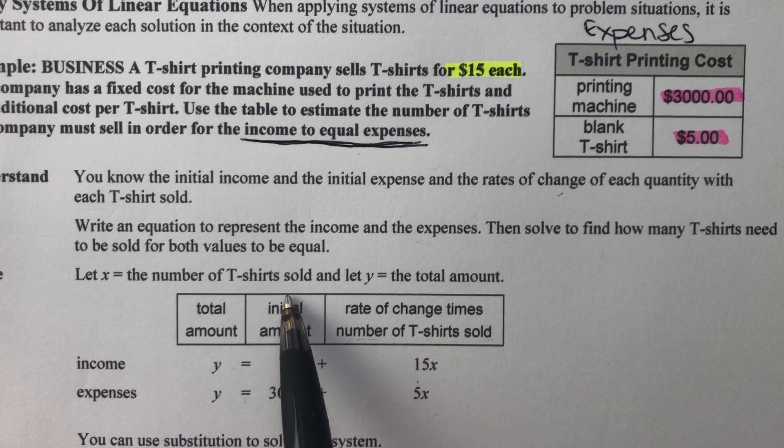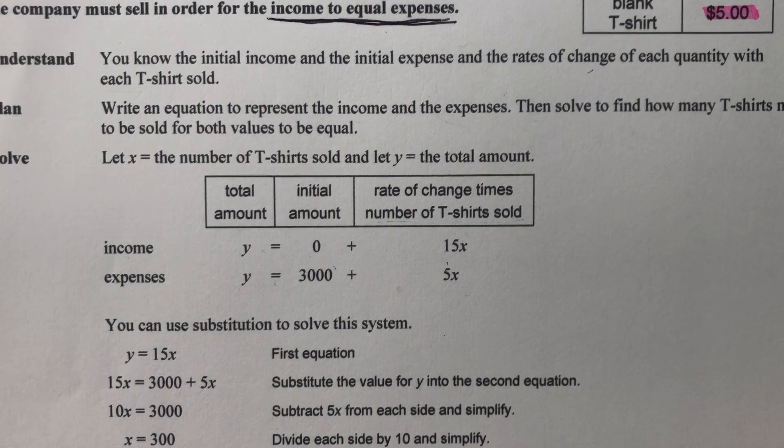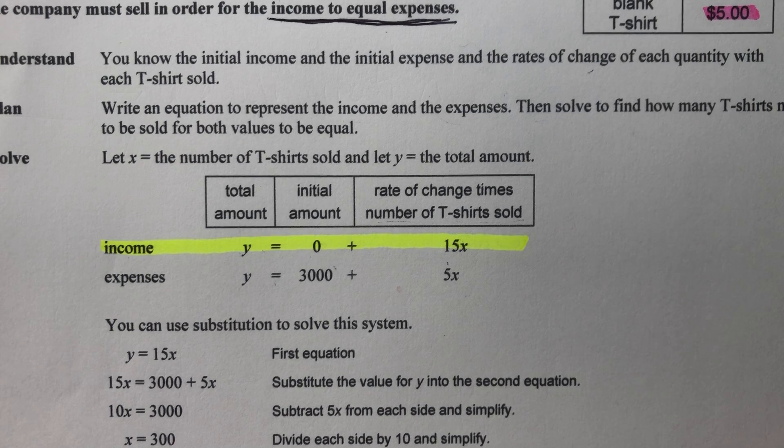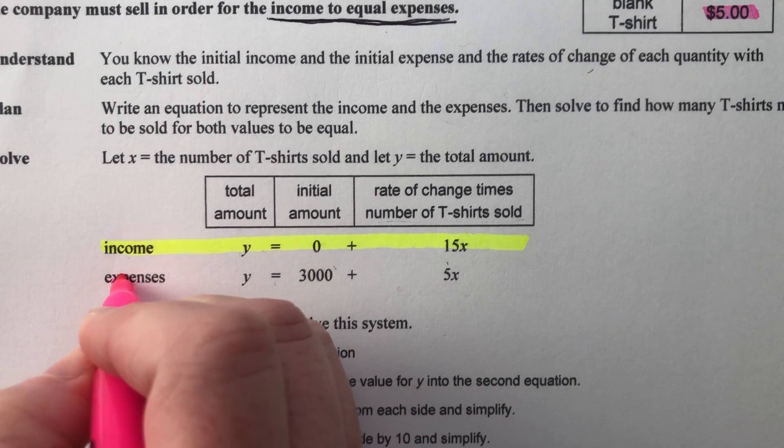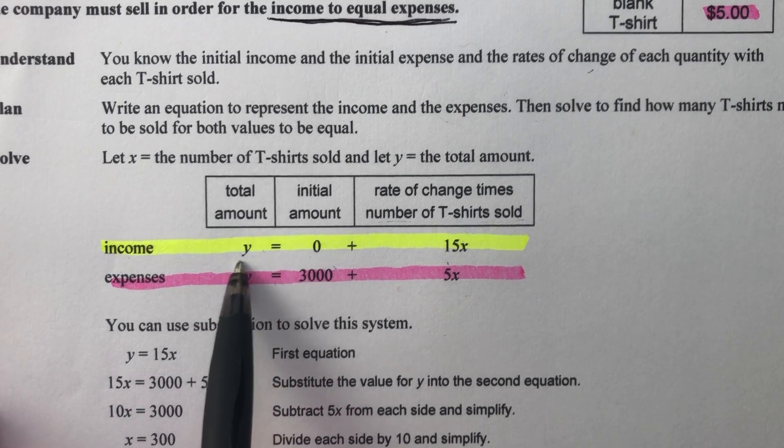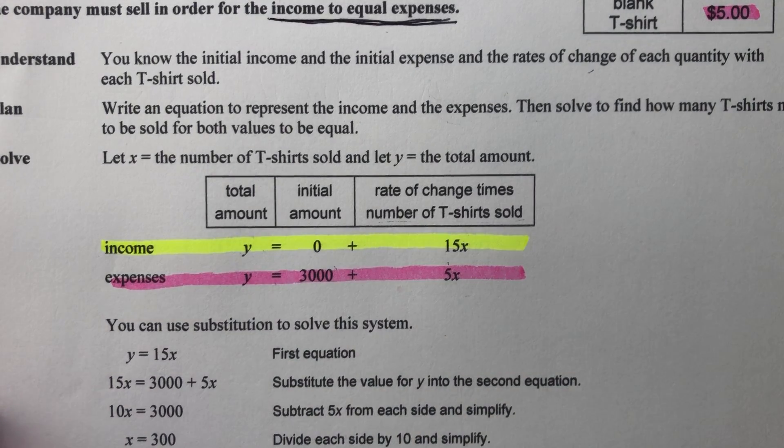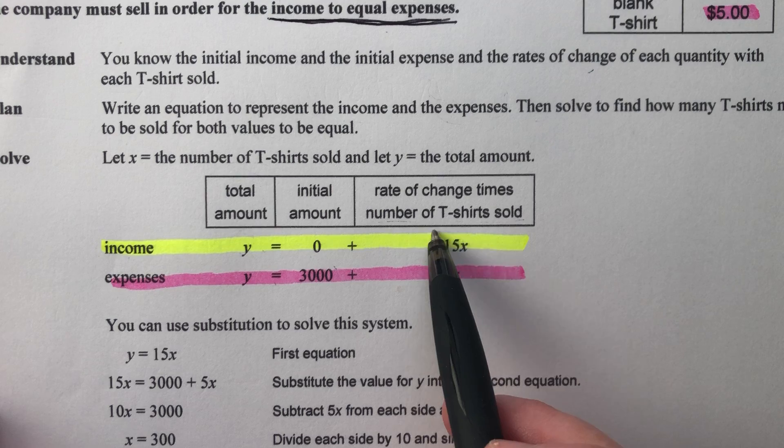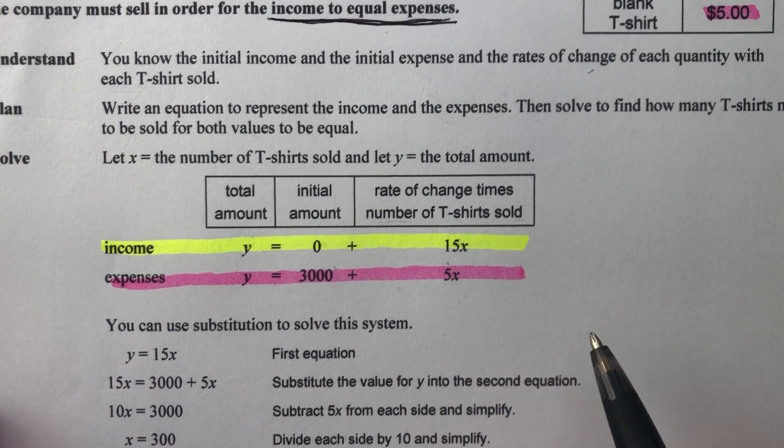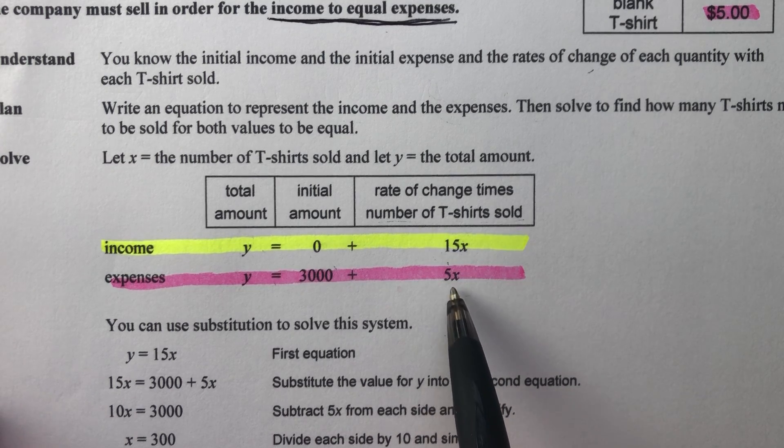So here it says, let X equal the number of t-shirts sold and Y equals the total amount. So income, and I'm going to highlight this in yellow because in my brain, this stuff gets all like I get confused. So I have to figure out a way to sort it out. Alright. So for the money I'm making, total amount is Y. So the total amount of money I make is equal to the initial amount I had in the bank, and it doesn't say you had anything, so nothing, plus I make $15 per shirt. And X represents how many shirts. The amount of money I have to spend, the total amount I have to spend is I had to spend $3,000 on a machine, and then I have to spend $5 per shirt.